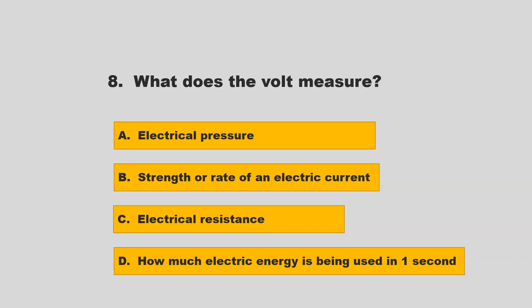What does the volt measure? Is it electrical pressure, strength or rate of an electric current, electrical resistance, or how much electric energy is being used in one second? If you chose A, electrical pressure, you are correct.